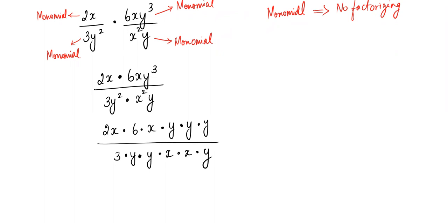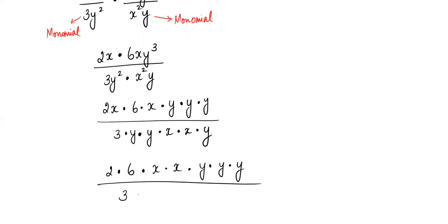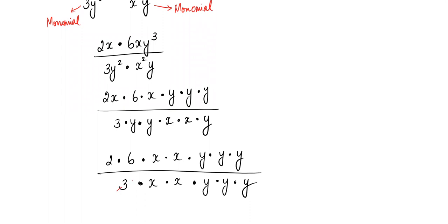Over time, when you get well-versed with these calculations, you can use the quotient rule mentally — for example, y³ over y² gives y¹ using 3 minus 2. But until then, let's take it slowly. As we did in the multiplying and dividing monomials section, group all numbers together, all x's together, and all y's together. I'll show it that way for this problem.